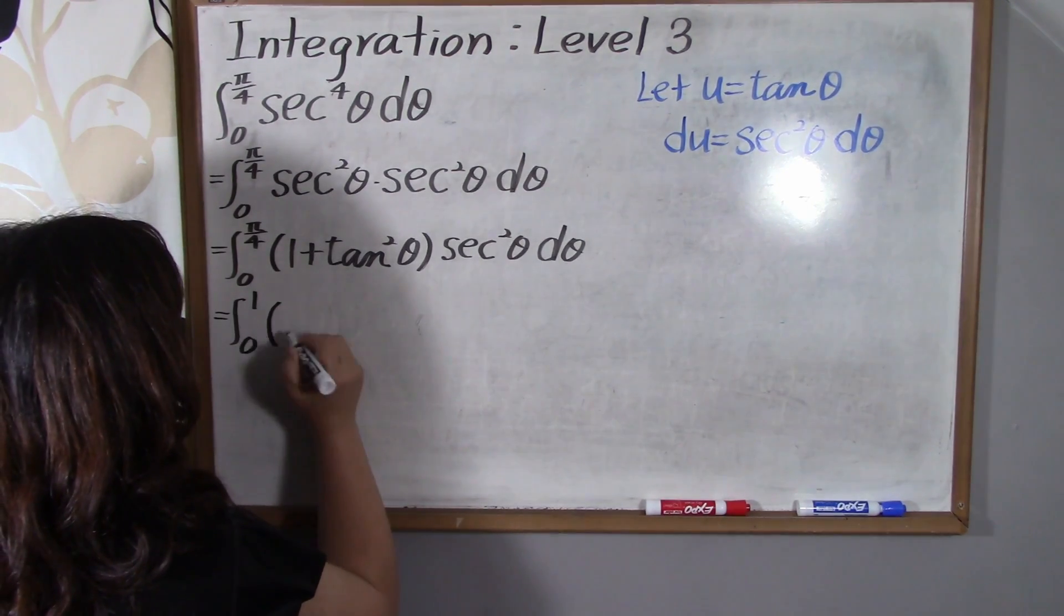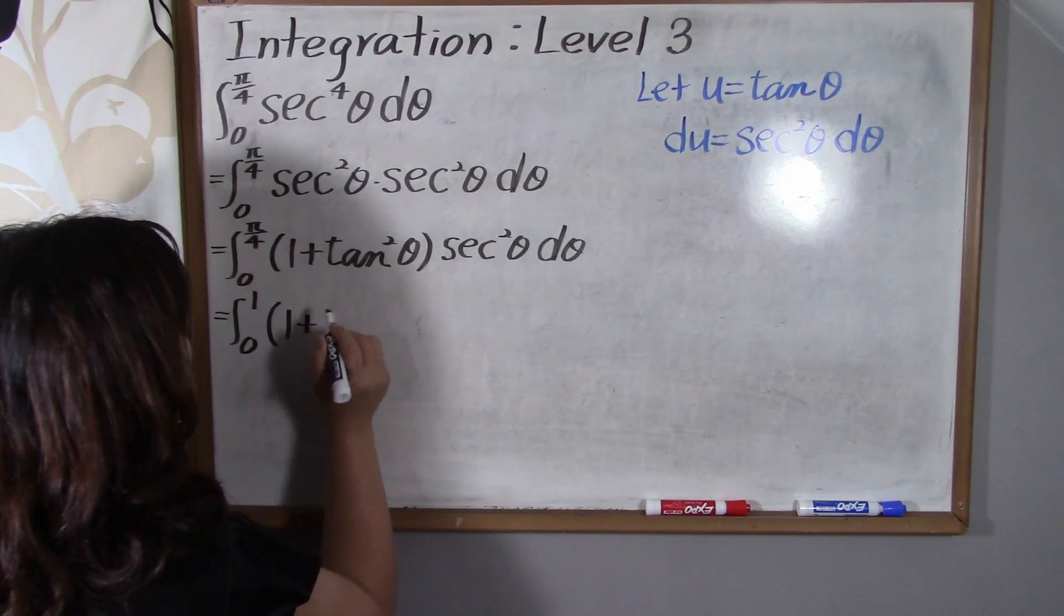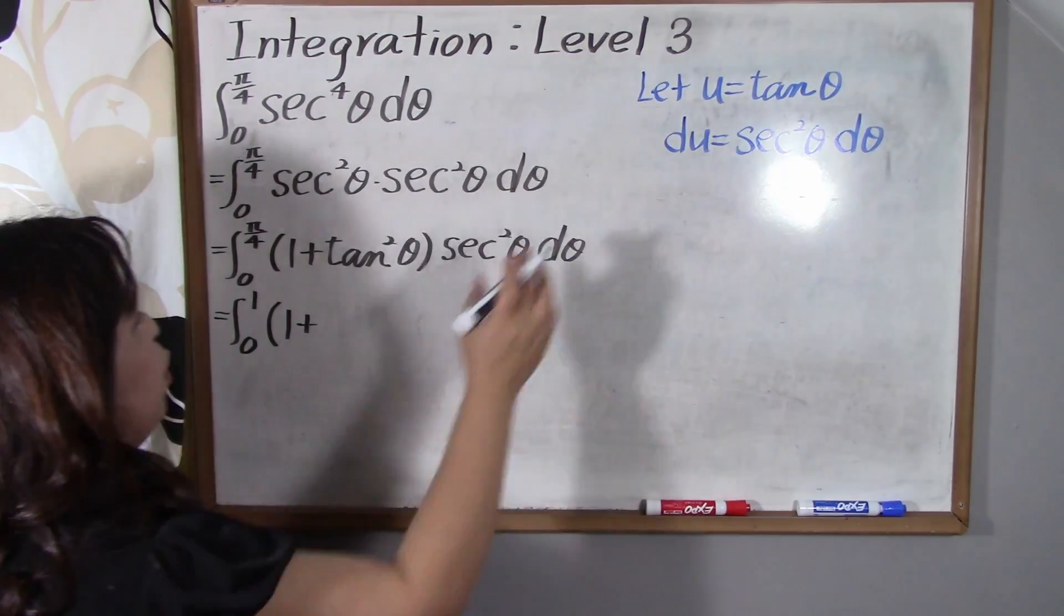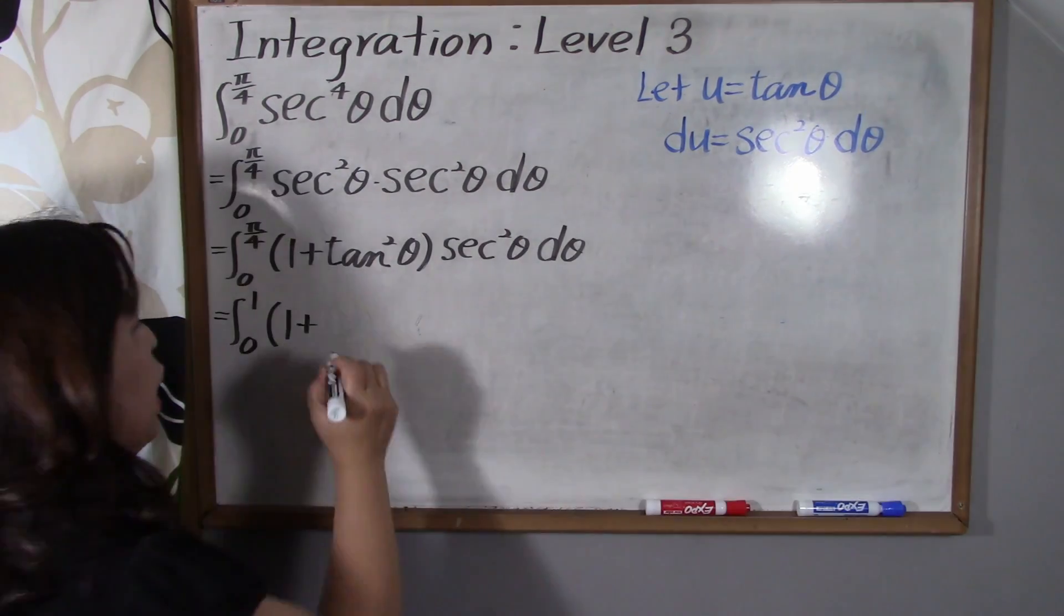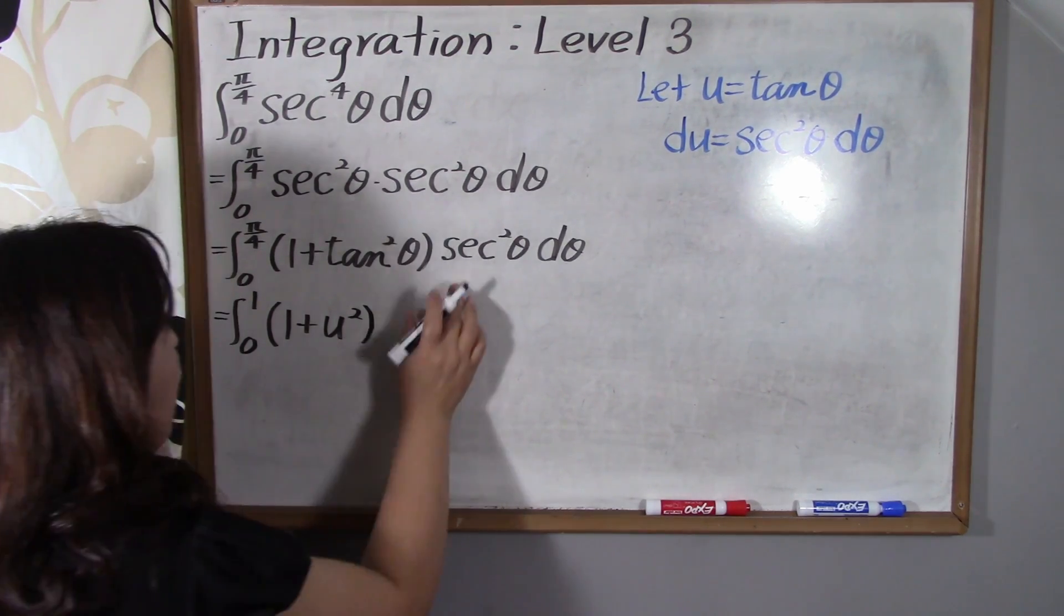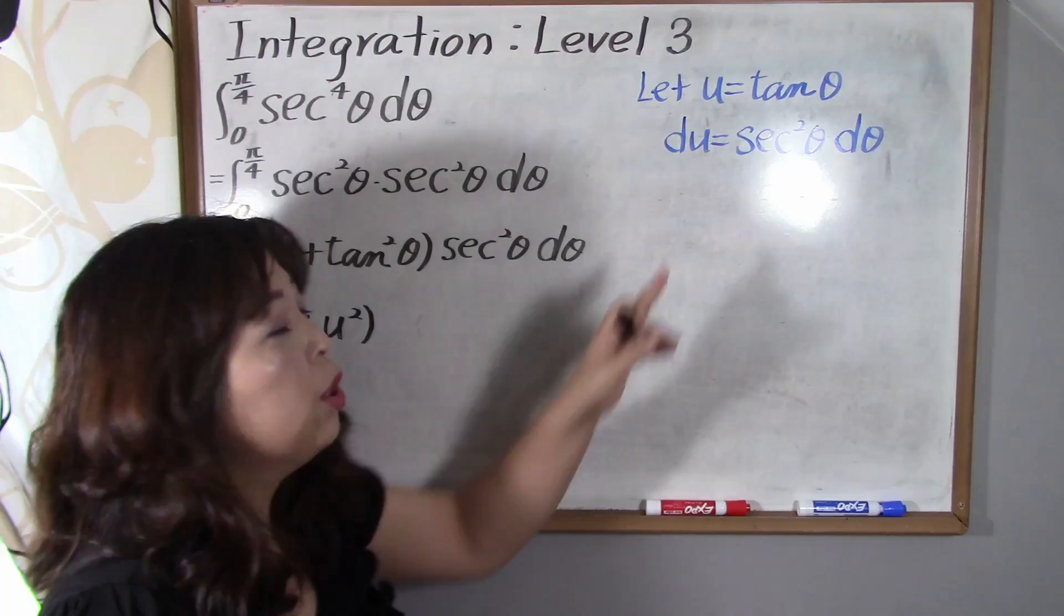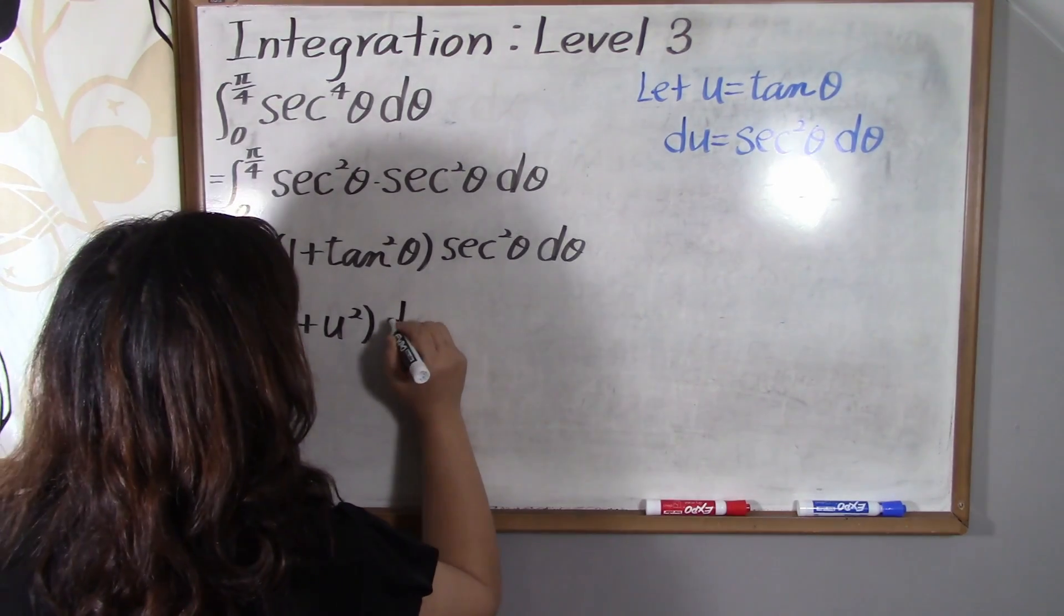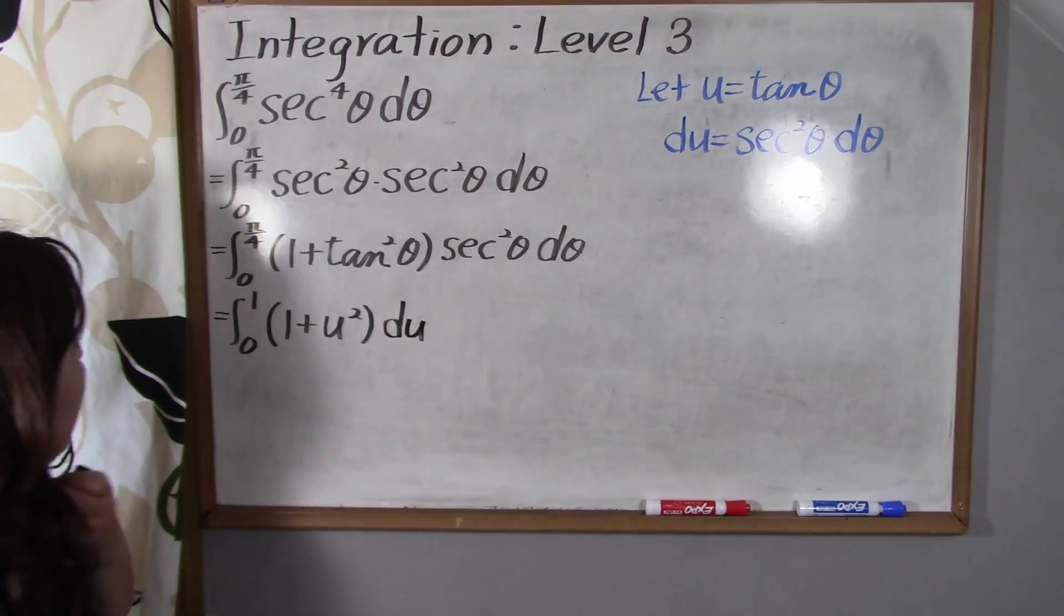And then we're gonna change over here. Parenthesis, 1 plus, so tangent theta is u, so tangent squared of theta is u squared. And then secant squared theta d theta is du.